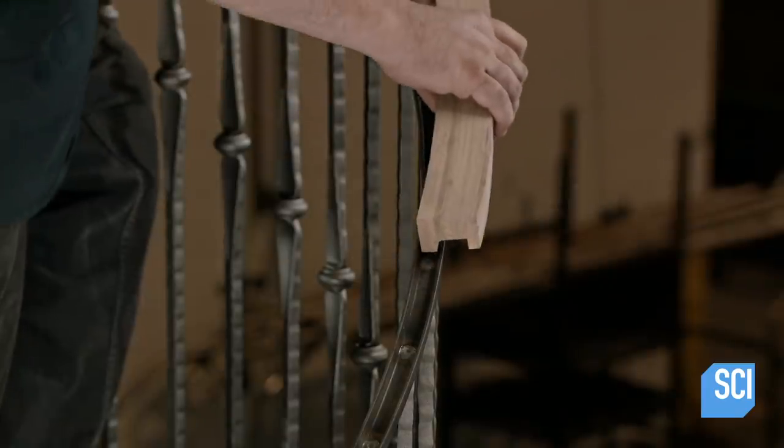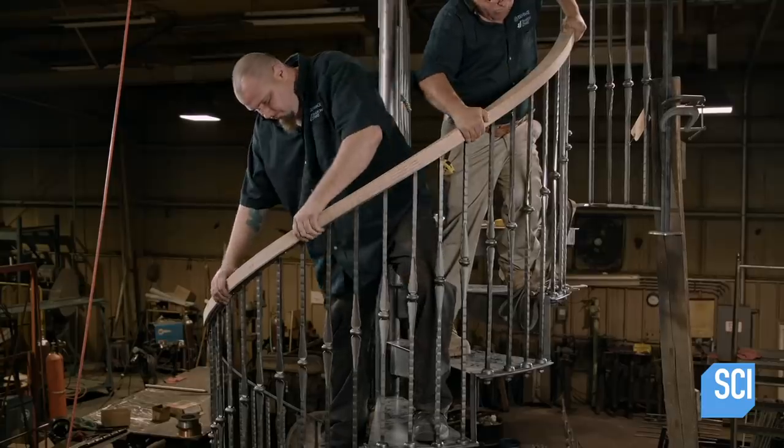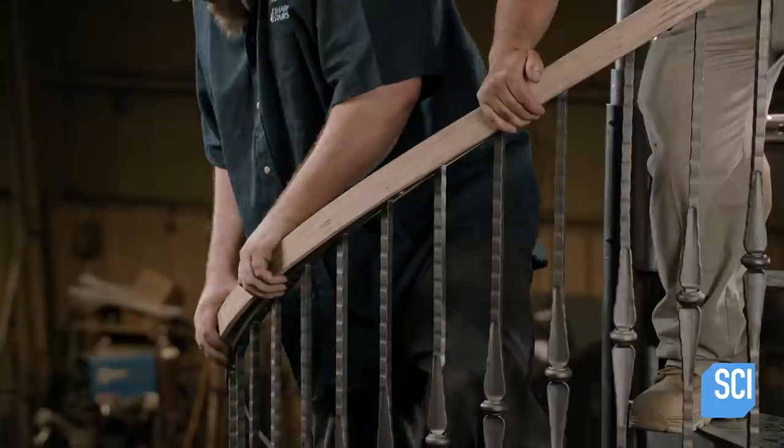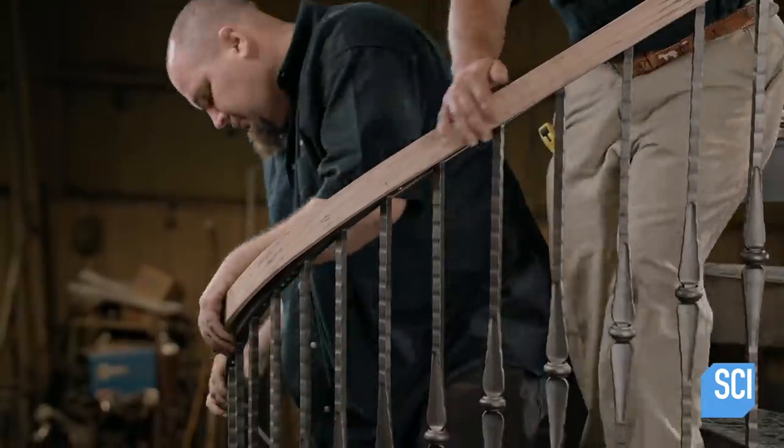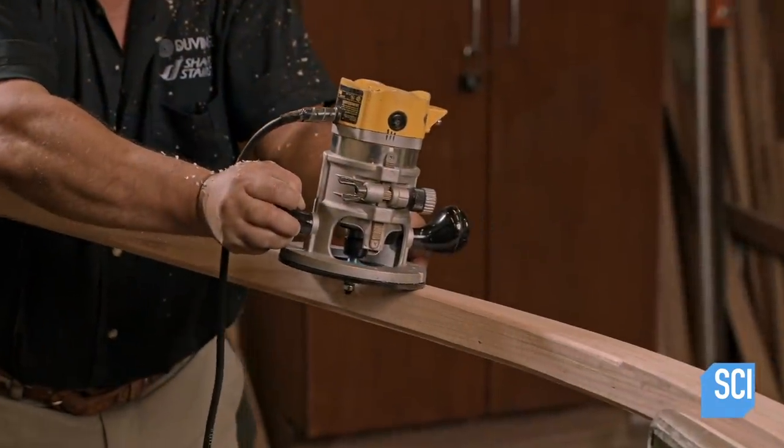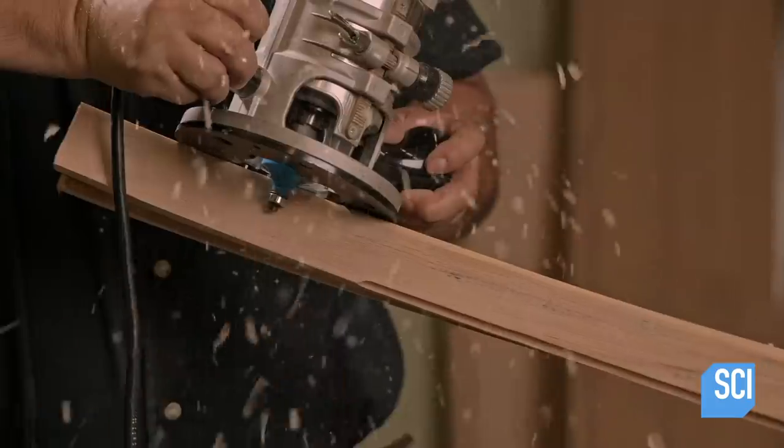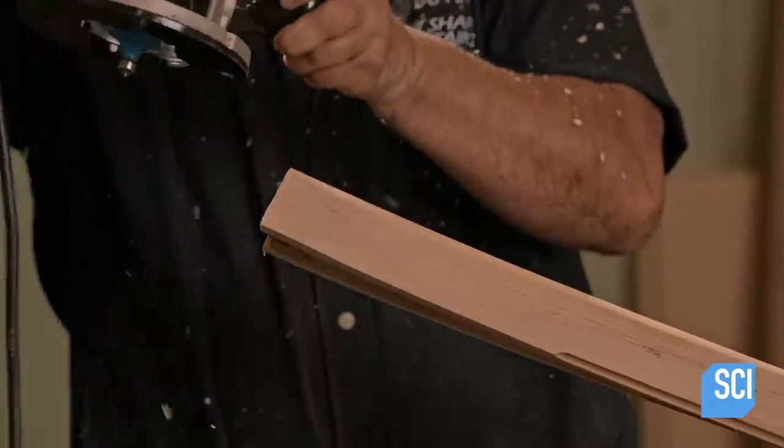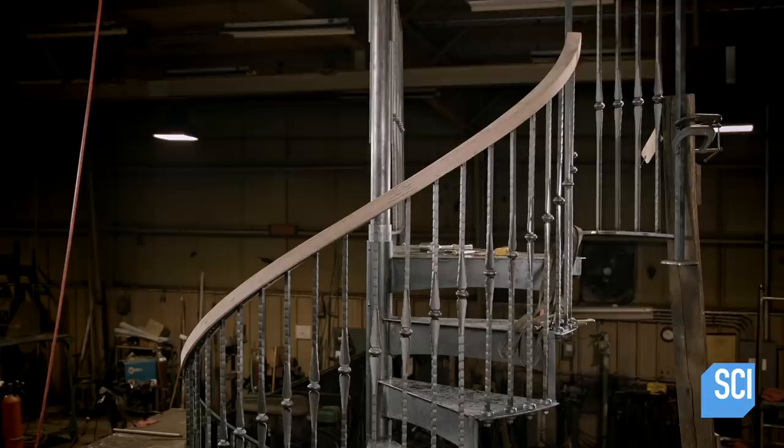A team then fits the wooden railing to the metal support structure. All of the rail sections fit together perfectly. After the pre-fit, they remove the railing and sculpt the edges to be rounder. The rounded edges complement the overall spiral design.